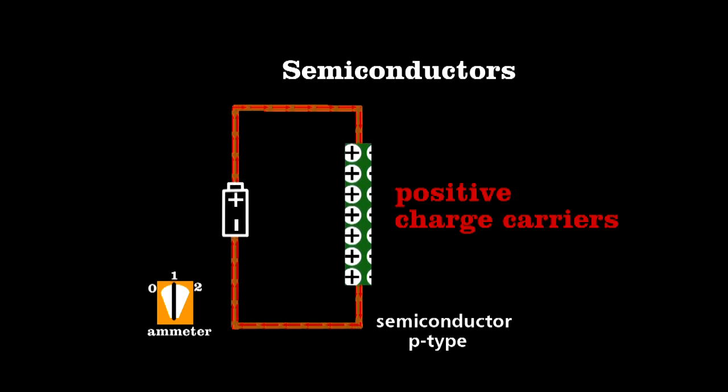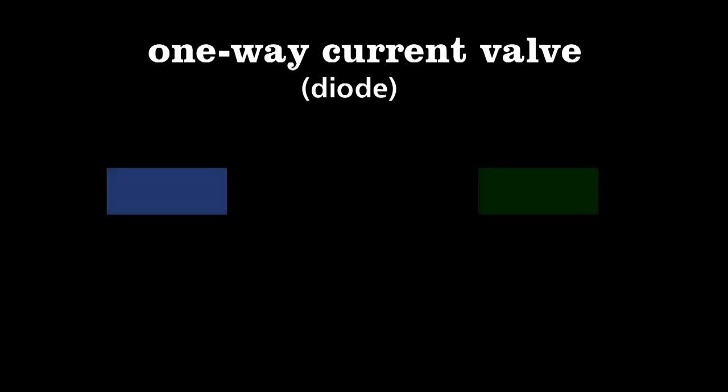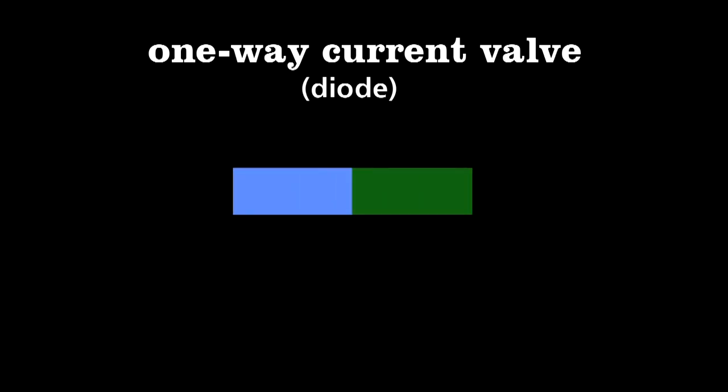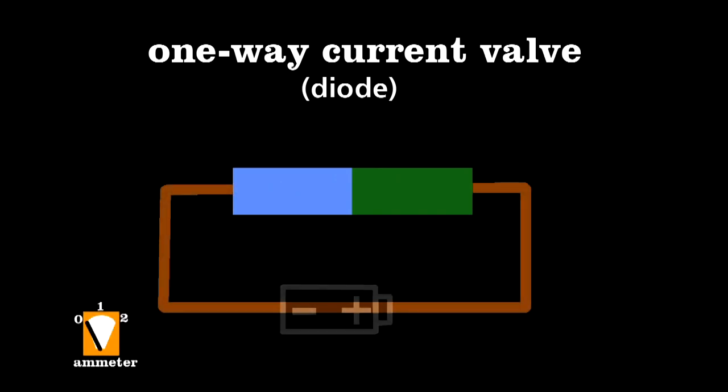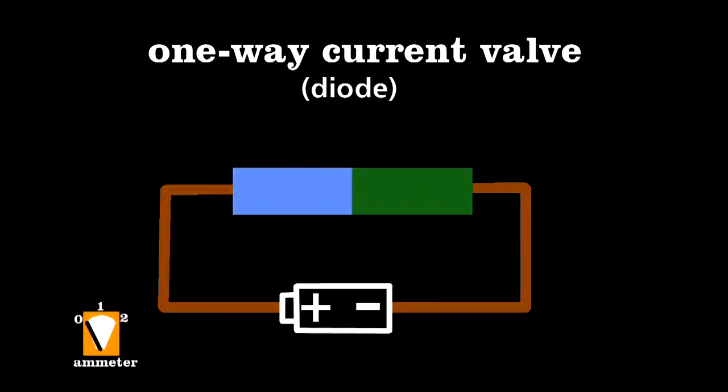It allows an engineer to make a highly reliable device that allows current to flow in only one direction. We can do this by making a sandwich of the two types of semiconductors. Here, the negative charge carrier one on the left and the positive one on the right. This semiconductor sandwich allows electricity to flow. Reverse the battery, and the current grinds to a halt.